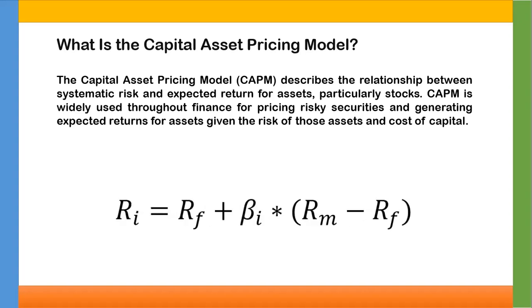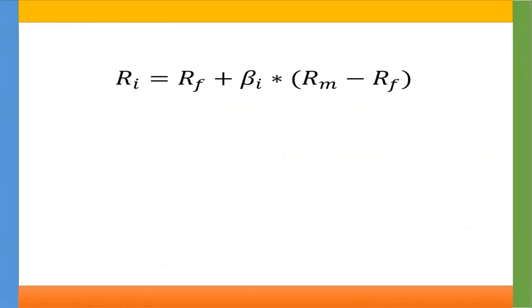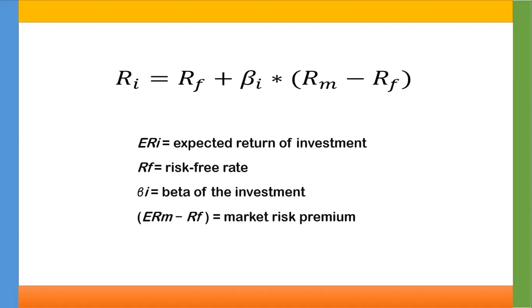Let's know the formula of CAPM. Here we can see that RI is equal to RF plus Beta into RM minus RF. ERI or RI means expected return of investment, where RF is equal to the risk-free rate. Beta means the beta of the investment, and RM minus RF is equal to the market risk premium, where RM is the expected market return on investment.